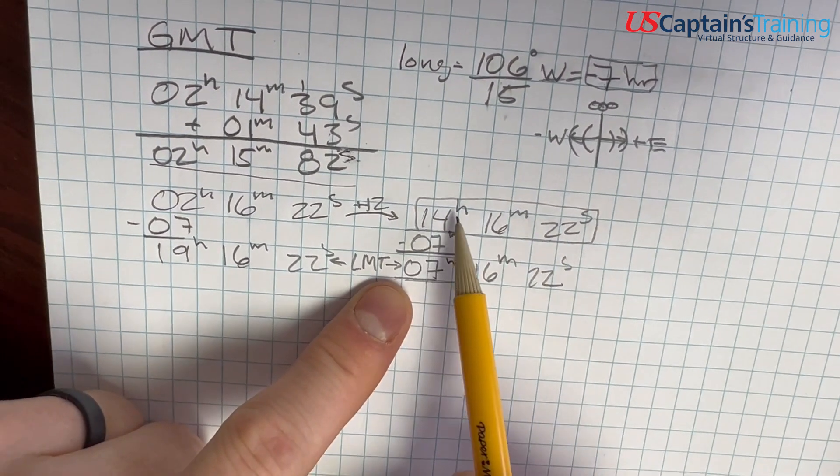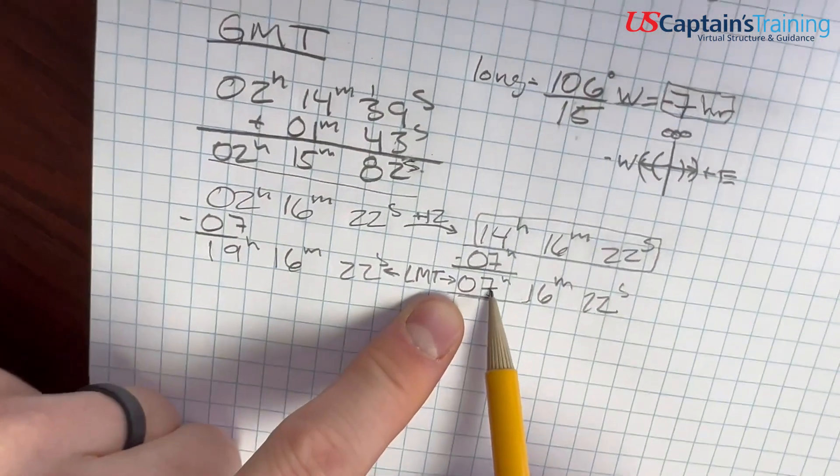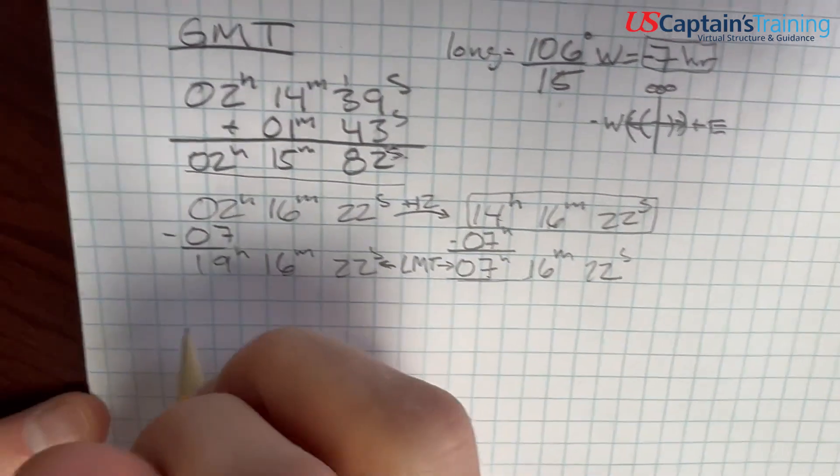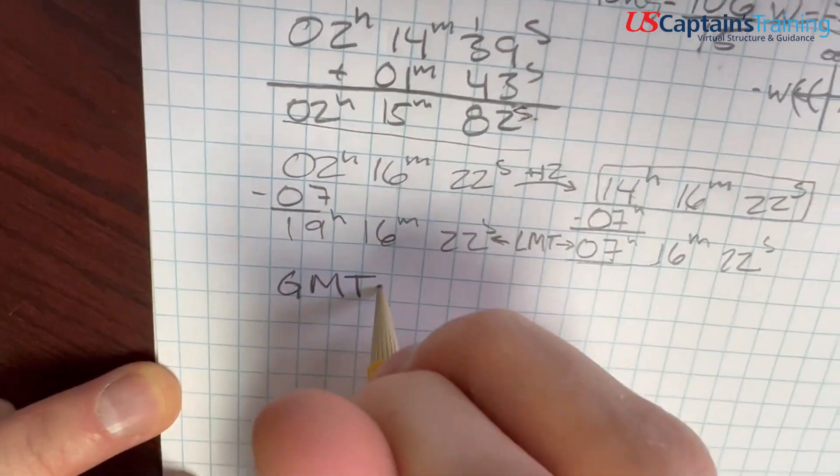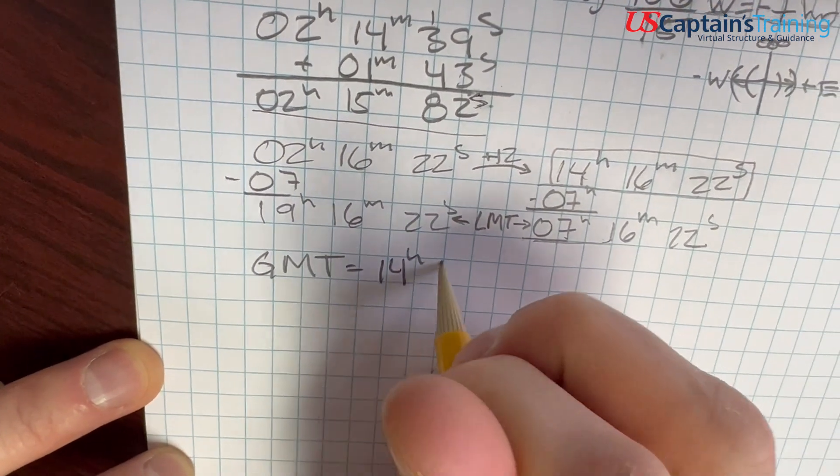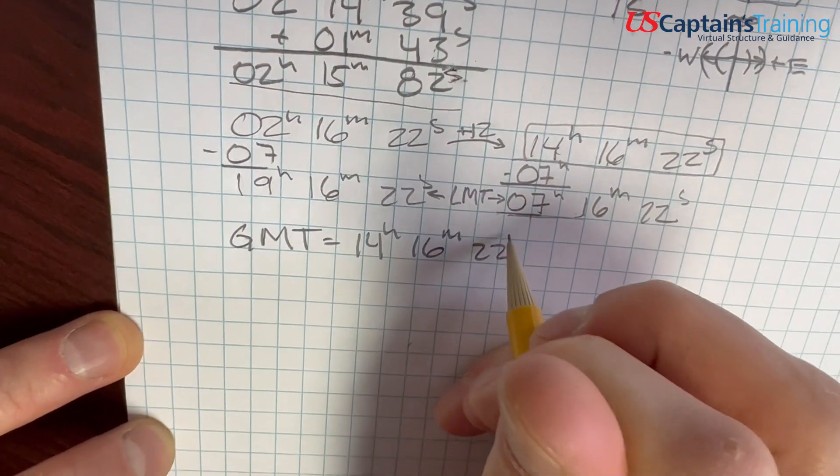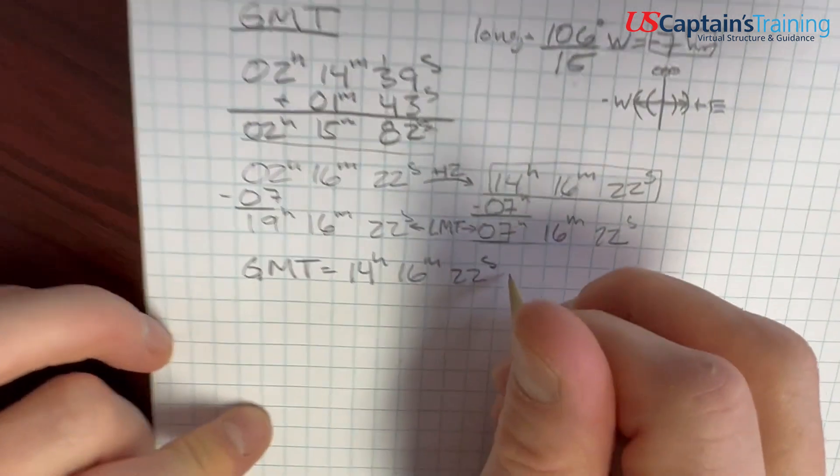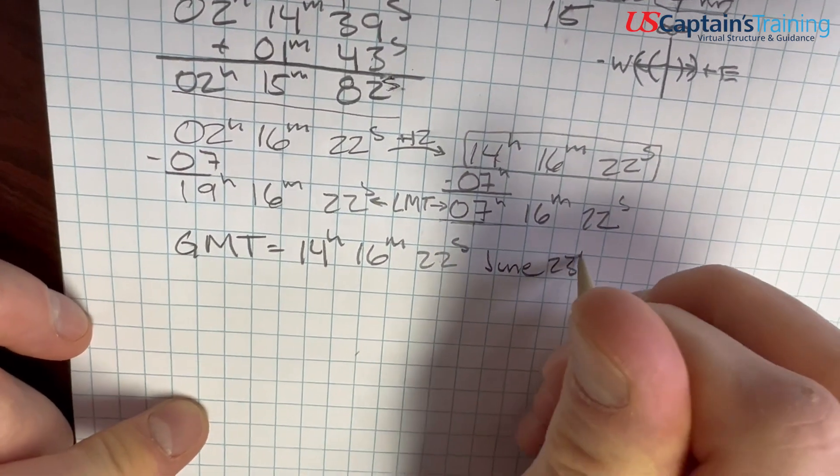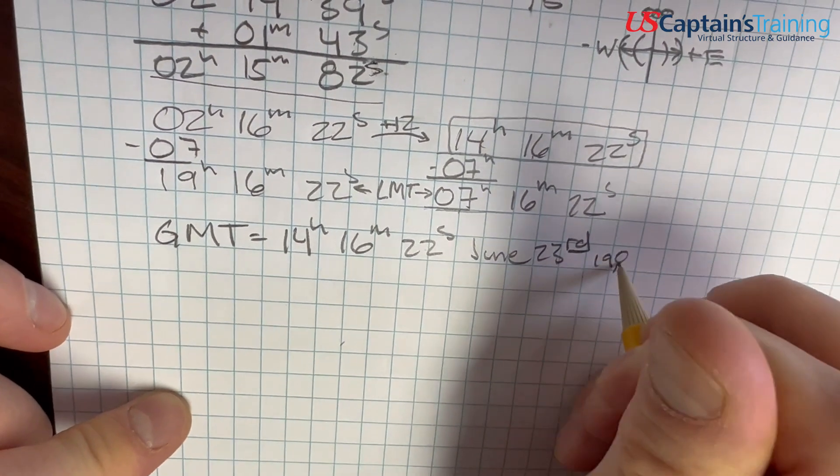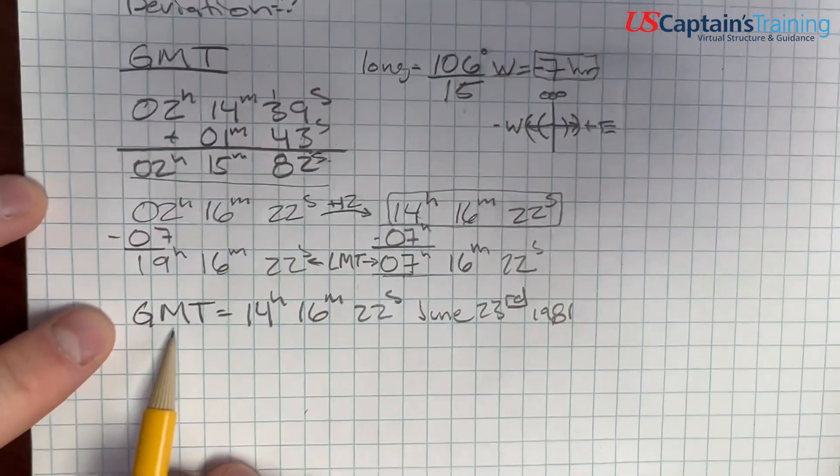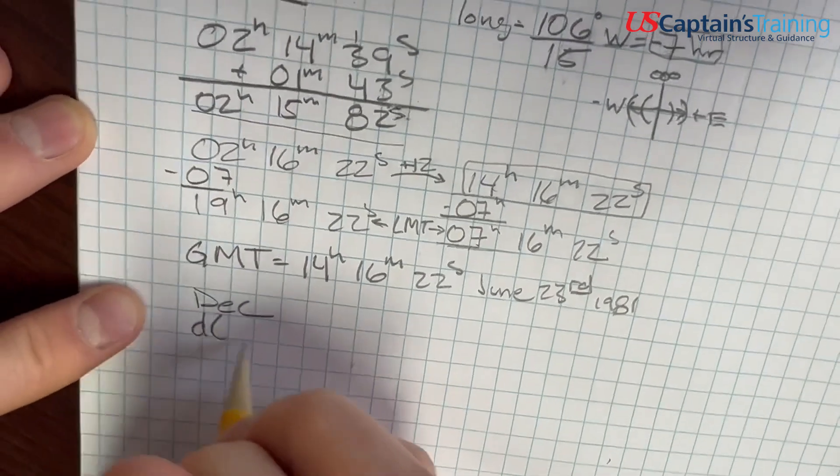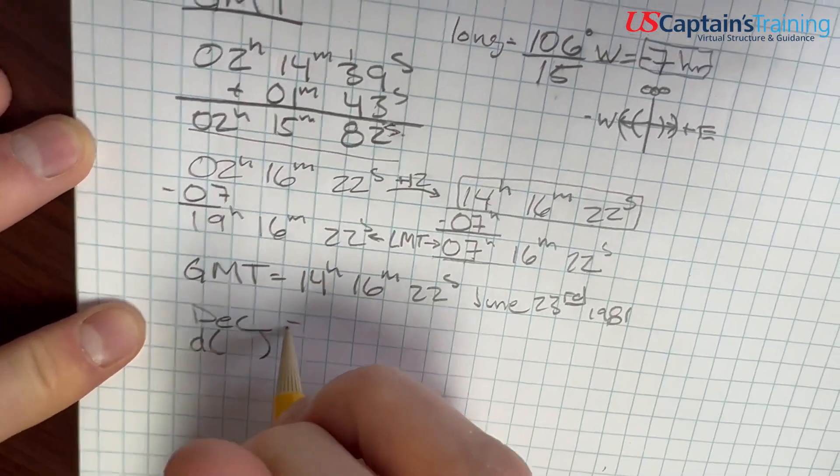That's our GMT. And we didn't switch days. When we subtracted seven hours, we're still in the same day. GMT equals 14 hours, 16 minutes, 22 seconds on June 23rd, 1981. And now that we have our GMT, we can jump in the nautical almanac and we can get our declination and the D value.